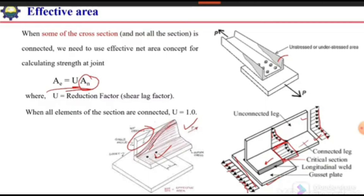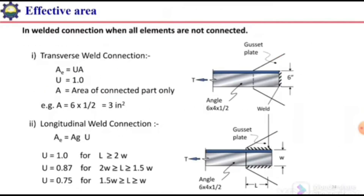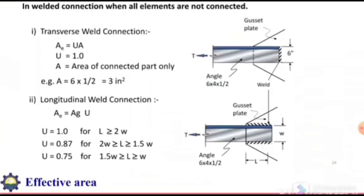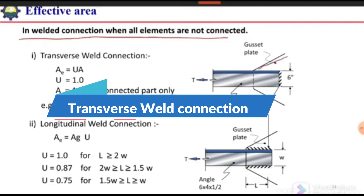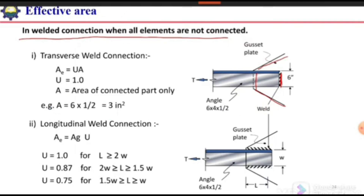To account for that non-uniform stress distribution, we need to apply this reduction factor, which is termed the shear lag factor. For calculating the effective net area in welded connections: if a channel section is connected to a gusset plate with only a perpendicular weld, then AE equals U times A, where the shear lag factor U equals 1. However, A here is not the gross area — it is only the area of the connected part.